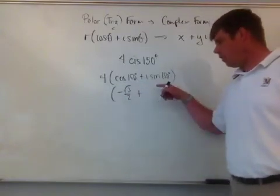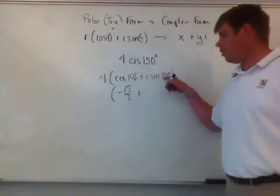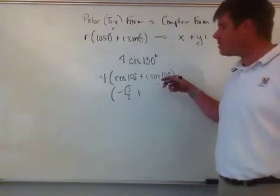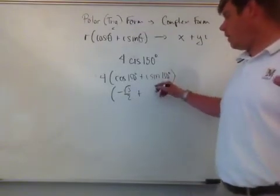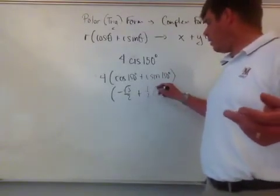Plus, so I'm leaving it plus because I know that I'm in the second quadrant, I know y is positive, so the sine of 150 degrees is going to be 1 half, so this is 1 half i. The i stays with it.